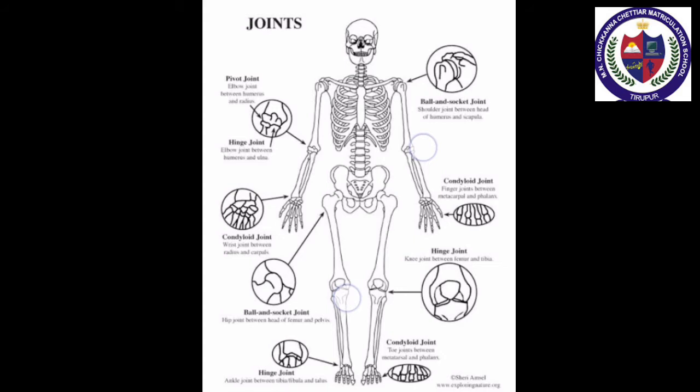Slightly movable joints: here only very little movement — it is partial movement — occurs between the two bones. The joint between a rib and the breast bone is an example. Freely movable joints: in this type, varying degrees of movement are possible between the two bones forming the joint.